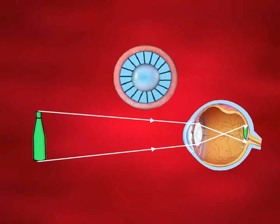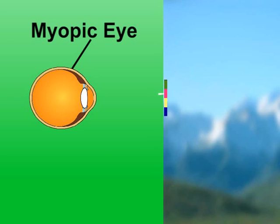But in case of a myopic eye, the rays of light coming from the distant object converge much before the retina and hence, the vision of the object is perceived as blurred.